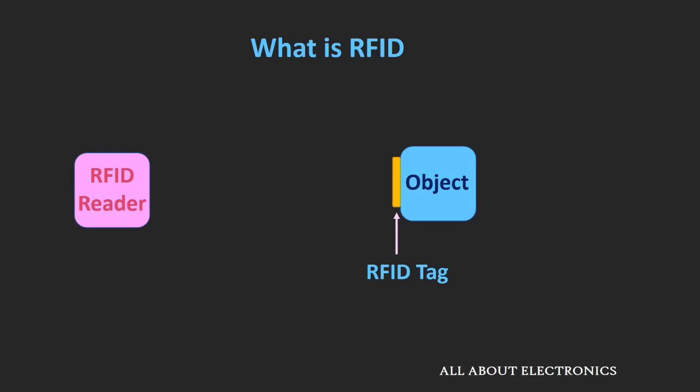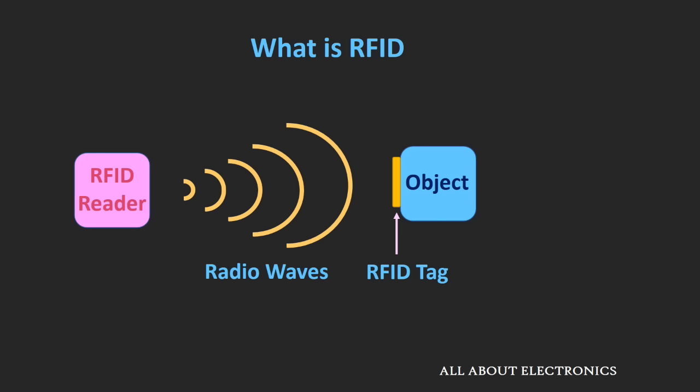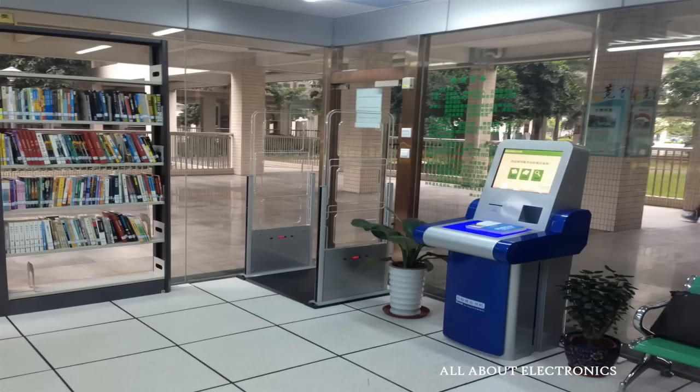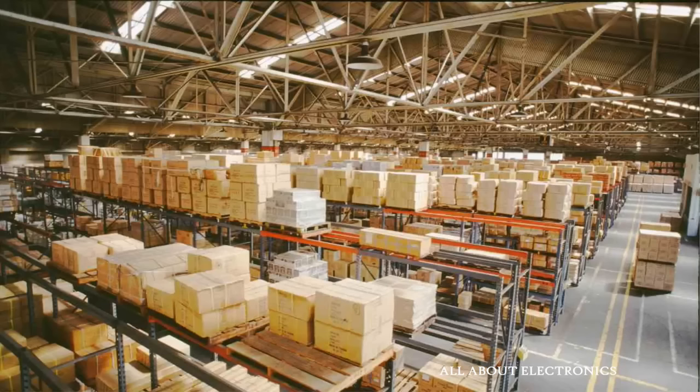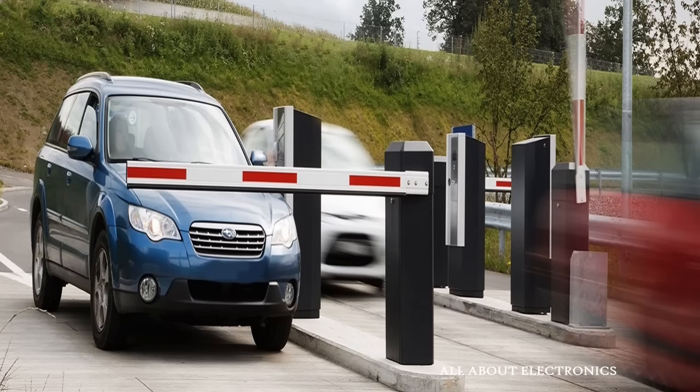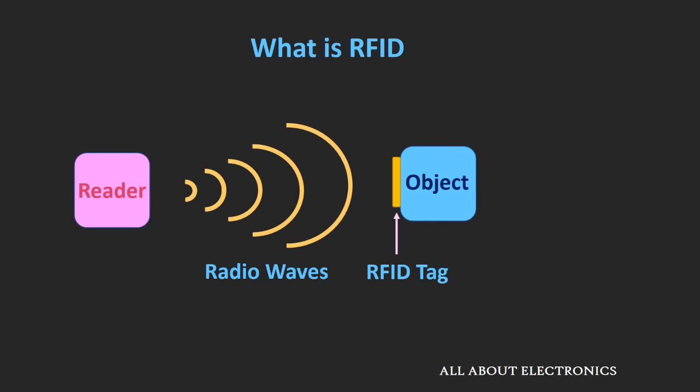Radio Frequency Identification, or RFID, is a technology which works on radio frequency or radio waves. This technology is used to automatically identify or track objects. These objects could be anything — books in a library, any item you are purchasing from a shopping mall, inventory in a warehouse, or maybe your own car. It can also be used for tracking animals as well as birds.